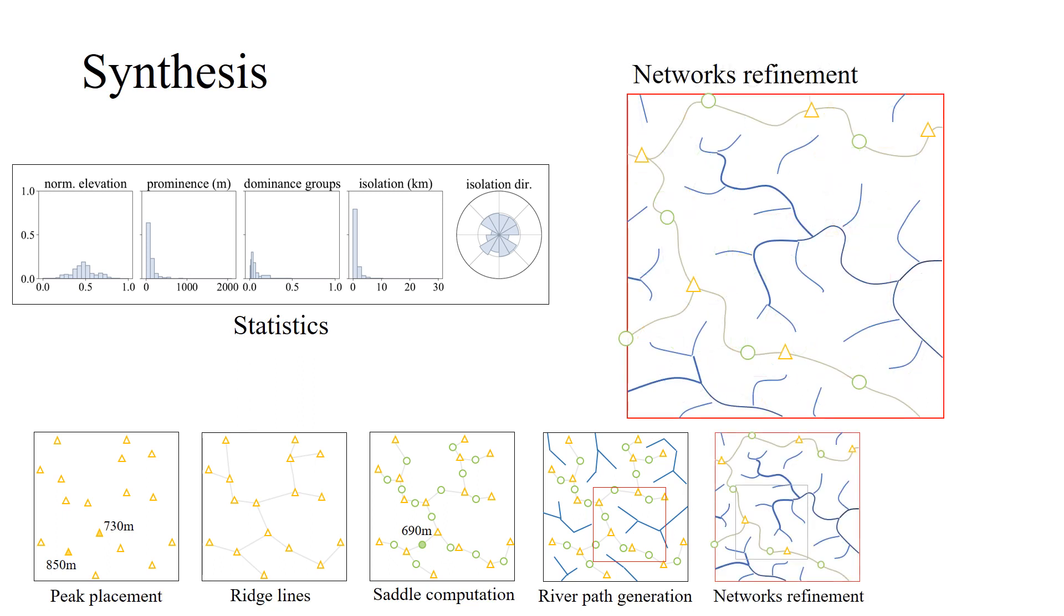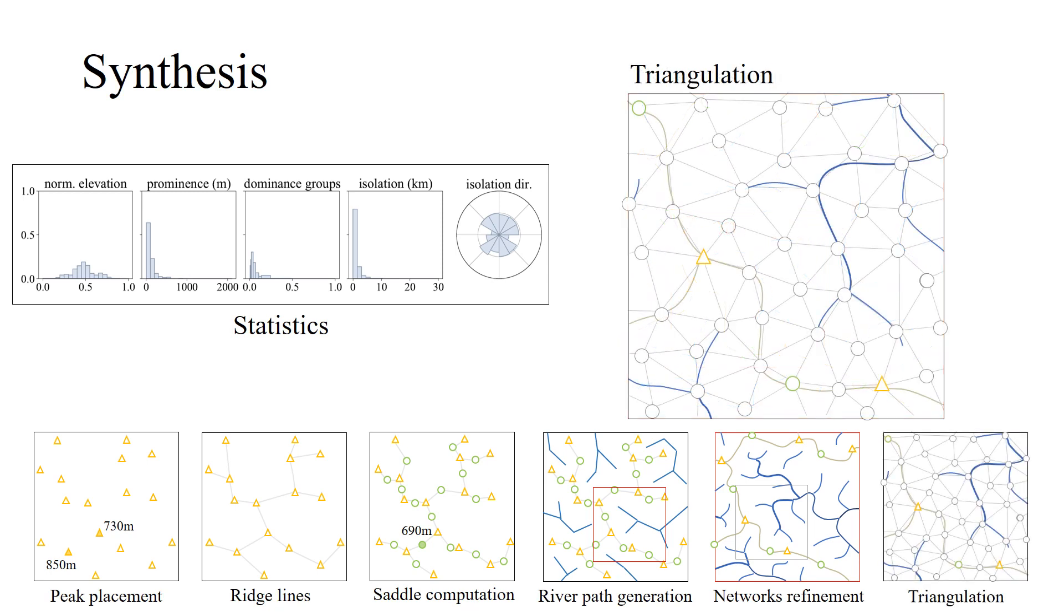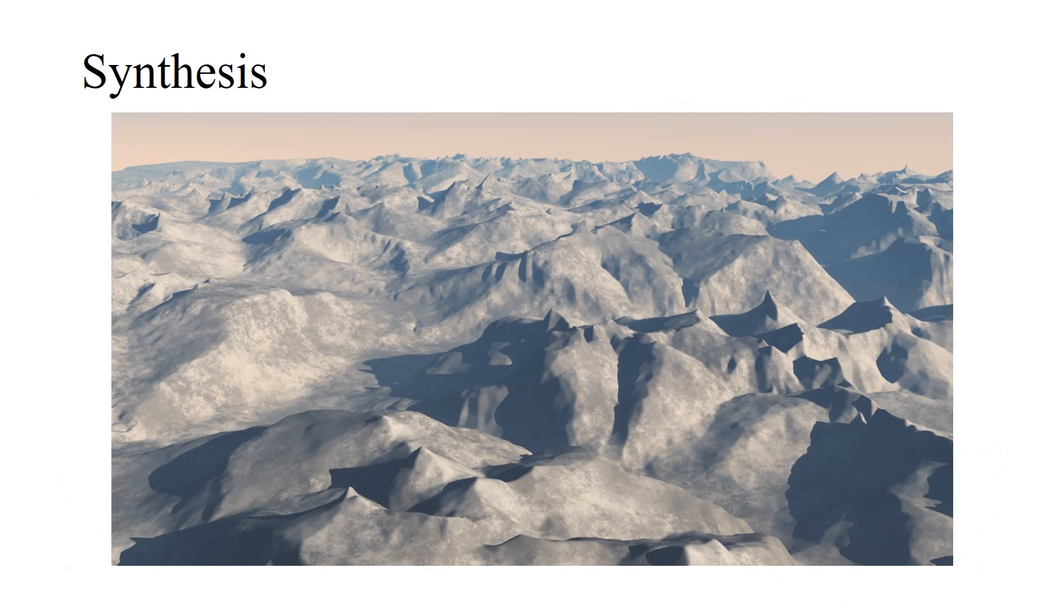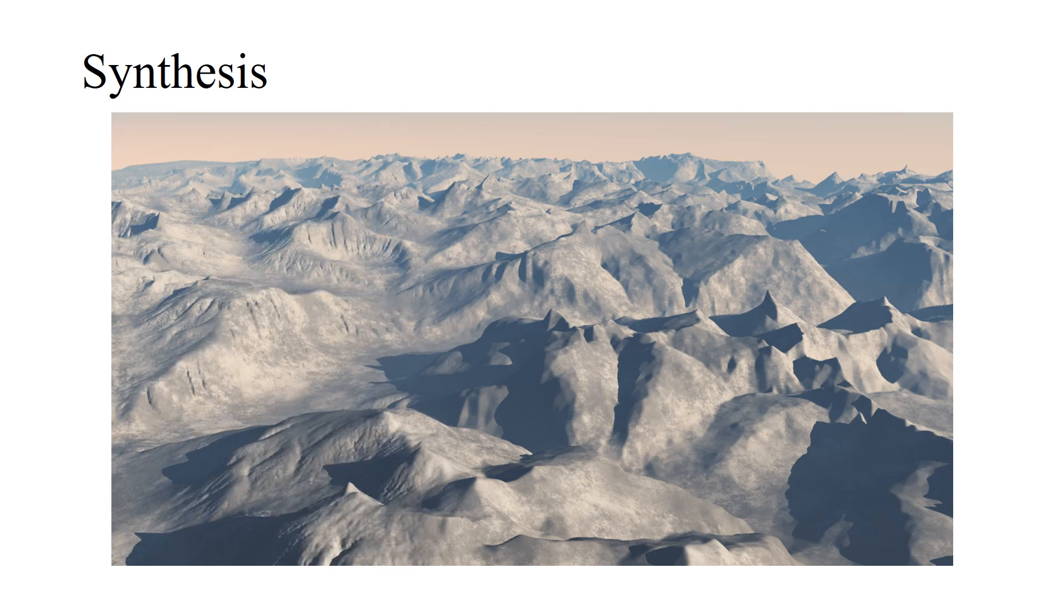Ridges and rivers are then refined and perturbed to obtain more realistic profiles. And eventually, a triangulated irregular network is generated by sampling the domain. The final DEM is obtained by multi-resolution erosion.